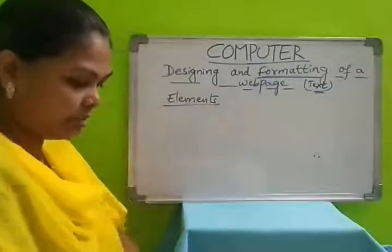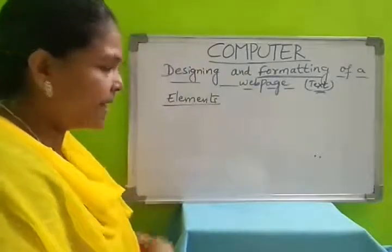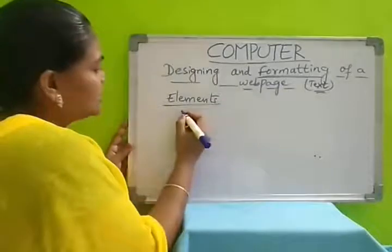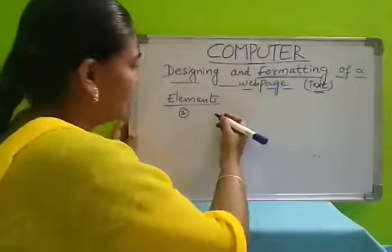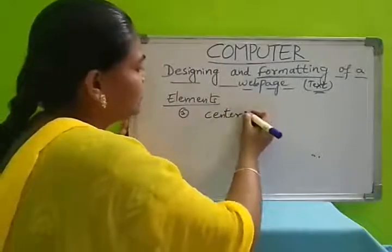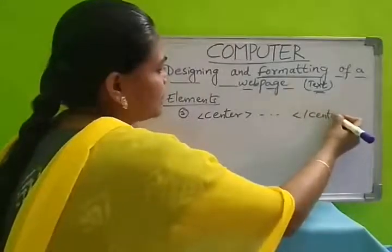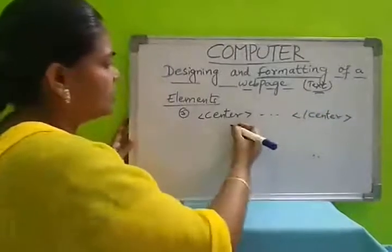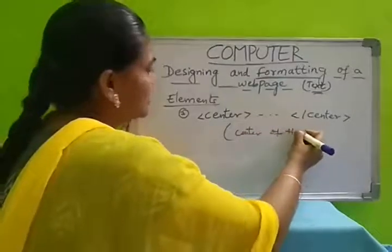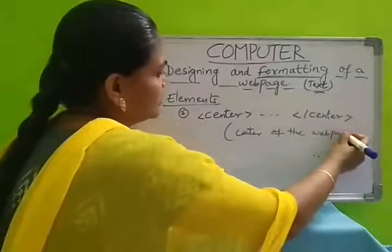Next, the third one is center. So the center tag is different from the align center. In this center tag, whatever information you write in the body part, that will be displayed in the center of the webpage. To display the information in the center of the webpage we use this tag — it also has an open tag and an off tag.